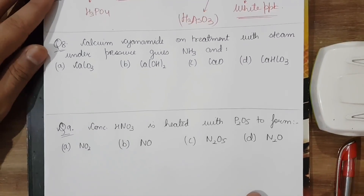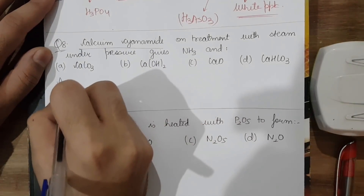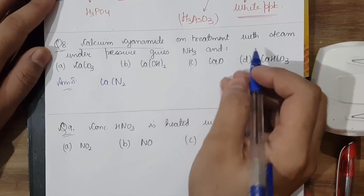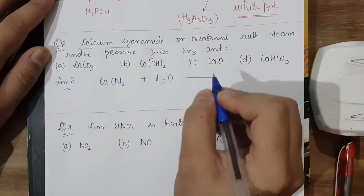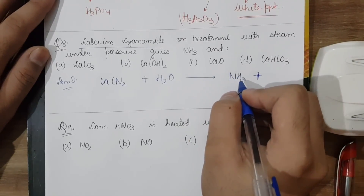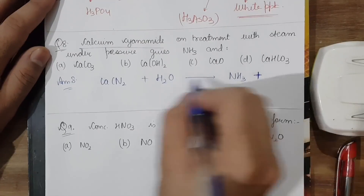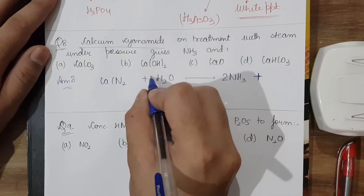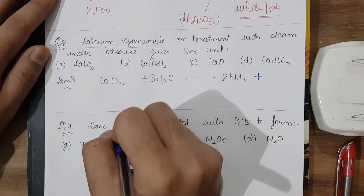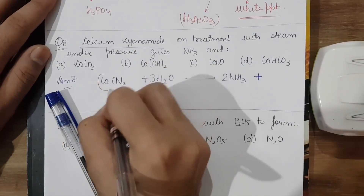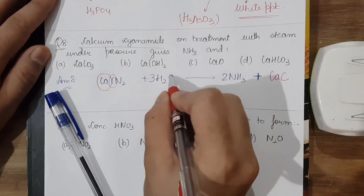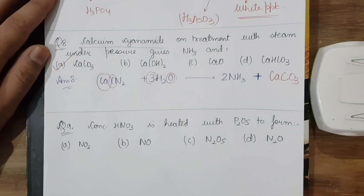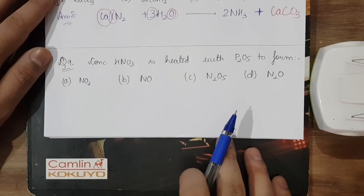The next question: calcium cyanamide (formula CaCN₂) on treatment with steam gives NH₃ and another product. Two nitrogens are present on the left so two should appear on the right — we get 2NH₃ using six hydrogens. What remains: one Ca, one C, and three oxygens give CaCO₃. So calcium cyanamide + steam → NH₃ + CaCO₃, and the correct answer is option A.